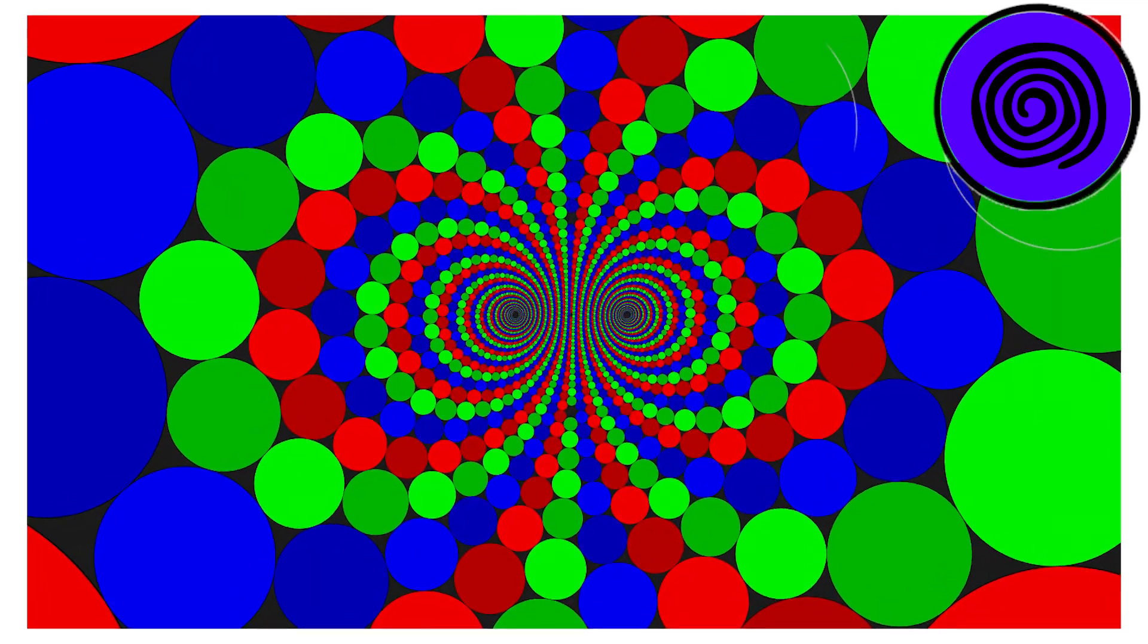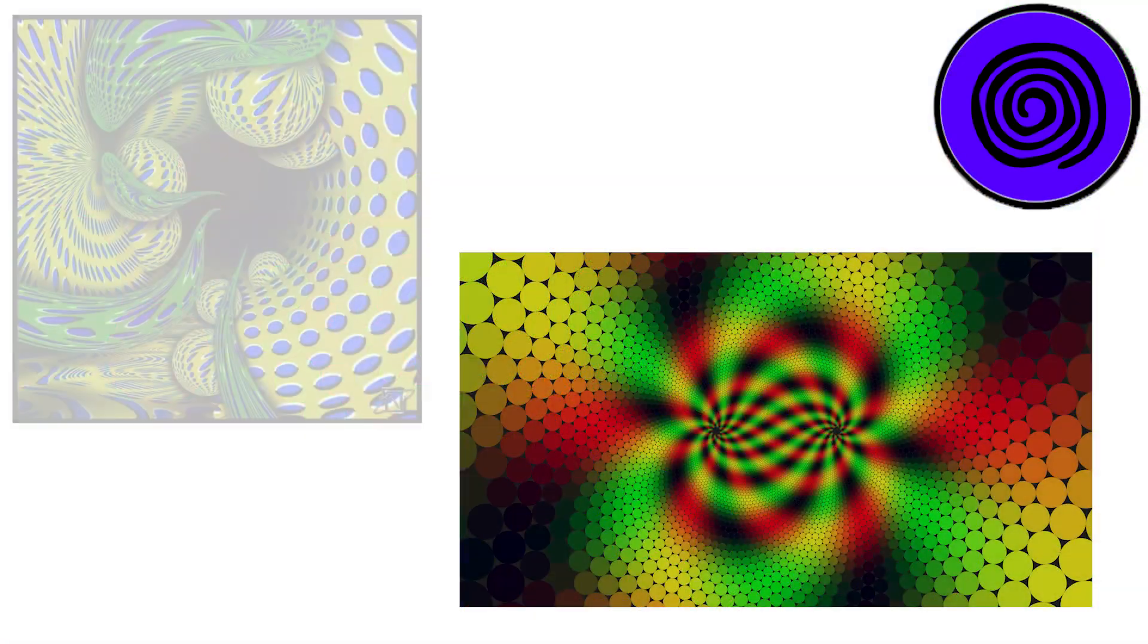The main reason why we perceive these lines as spiraling is because of their constructive interaction with the context. The rings are made up of black and white stripes that gradually change their widths, which creates the impression of a spiral.